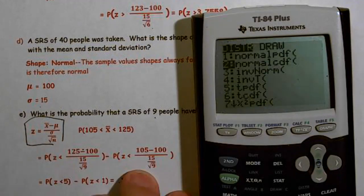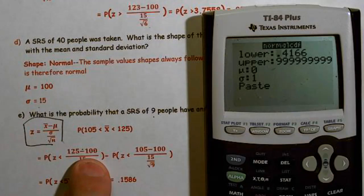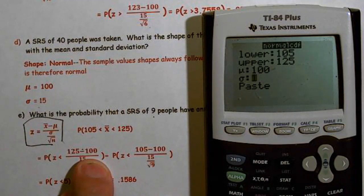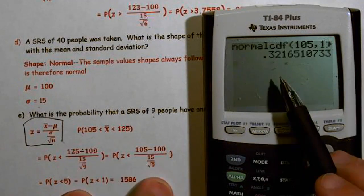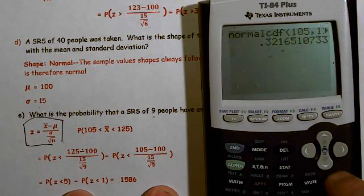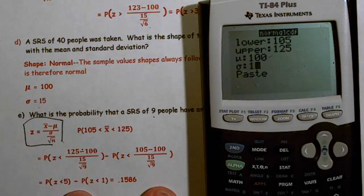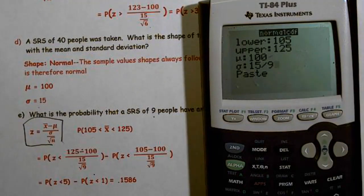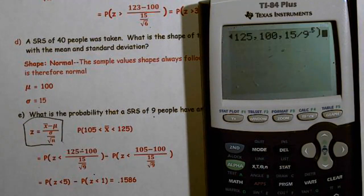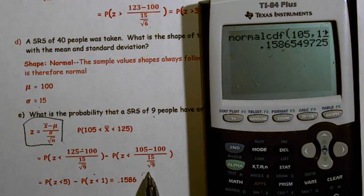Using normal CDF: lower bound = 105, upper bound = 125, mean = 100. Remember the standard deviation is not 15 — it's 15 divided by √9. I can enter that as 15 divided by 9 raised to the half power. The result is 0.1586. Do not forget to divide by the square root of the sample size.